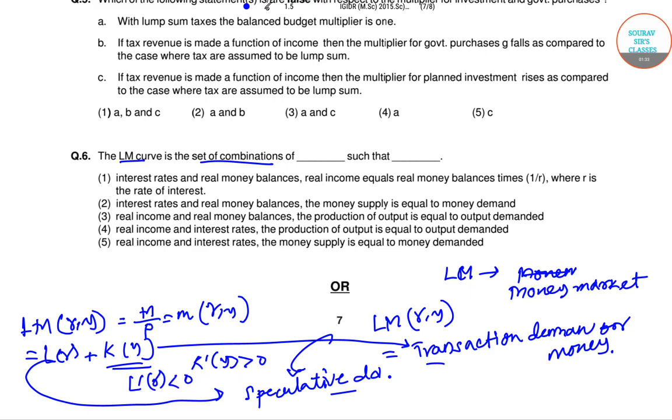By K prime Y we say that the transaction demand for money is the money that we use for everyday purpose, for everyday transactions. When income increases, my money demand increases.